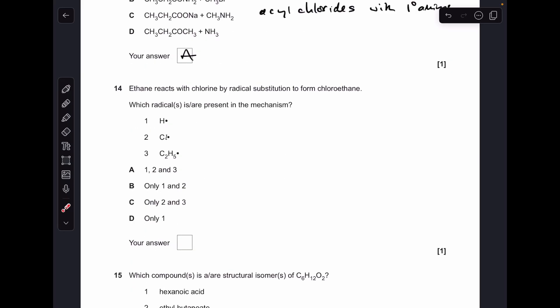Question fourteen. Which radical or radicals are present in the mechanism for radical substitution of chlorine with ethane? Never seen one of those before in all my career, so that's definitely not an option. Yes, chlorine radicals will be produced, and so will ethyl radicals. So two and three only, C is the answer.